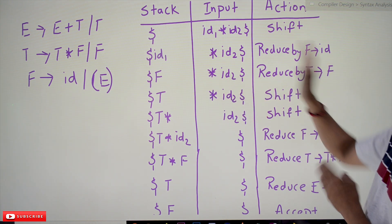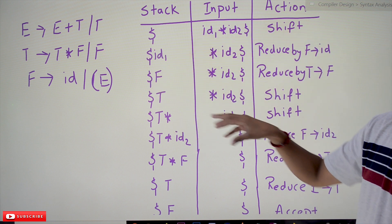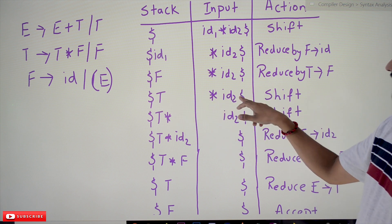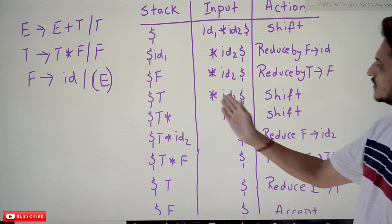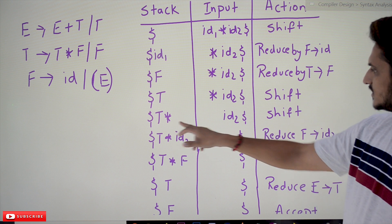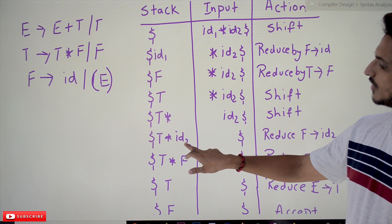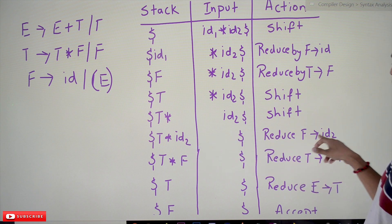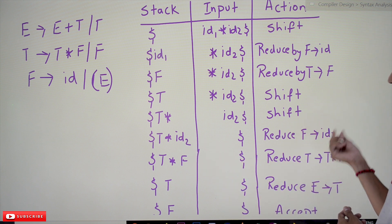Now F is on the stack. Reduce: pop F and place T onto the stack using T → F — that is what reduce operation means. T is now on the stack. The remaining input is * id2 $. Shift operation is performed: star (*) is shifted to the stack, and then id2 is shifted to the top of the stack.